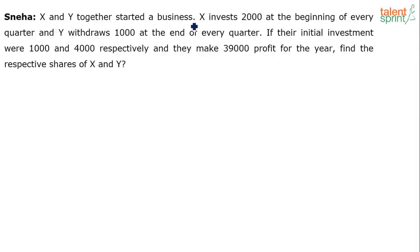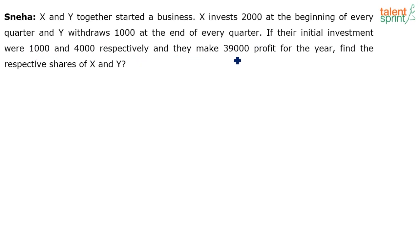X and Y together started a business. X invests 2,000 at the beginning of every quarter and Y withdraws 1,000 at the end of every quarter. If their initial investments were 1,000 and 4,000 respectively and they make 39,000 profit for the year, find the respective shares of X and Y.